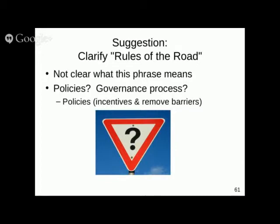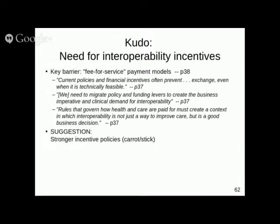On interoperability incentives: on page 38 they identify that a key barrier is the fee-for-service payment model currently used almost ubiquitously in this country. There are a number of other mentions that this represents a key barrier because it puts the incentive in the wrong direction. I think this is really good that they're calling out this problem, and I would suggest that they go further with stronger incentive policies.